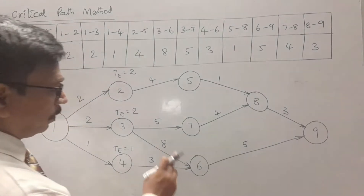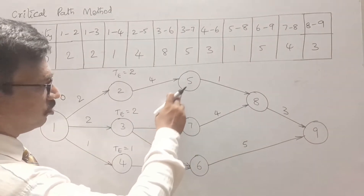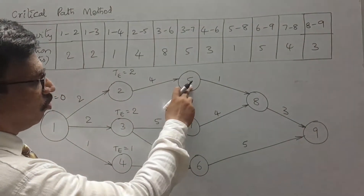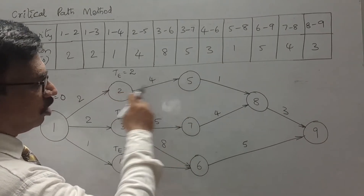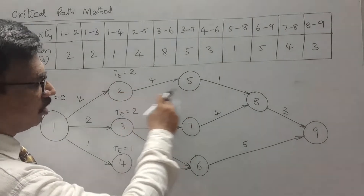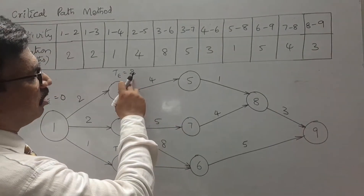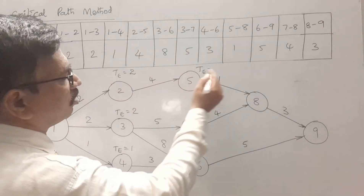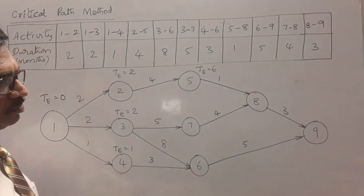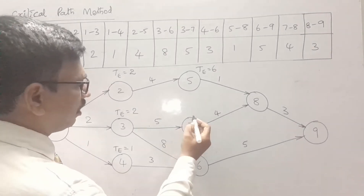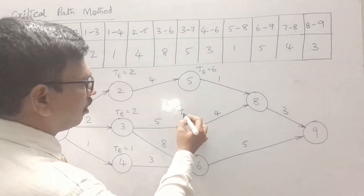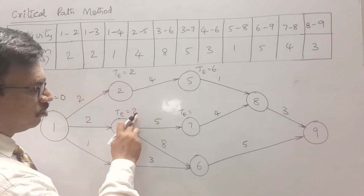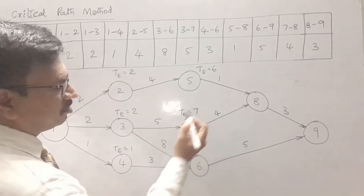Coming to the other nodes 5, 6, and 7: node 5 can only be reached from node 2, so TE = 2 plus 4 = 6. Node 7 can be reached from node 3, so TE = 2 plus 5 = 7.